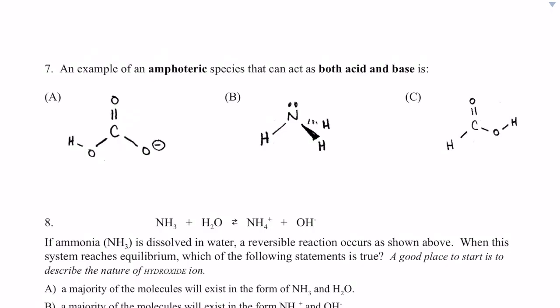Number seven, an example of an amphoteric species that can act as both acid and base. So acid meaning it can donate a proton, base meaning it can accept a proton. So we need to find one of these that can do both of them.